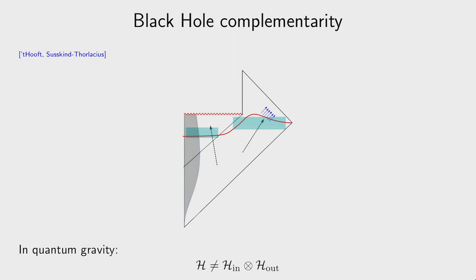It's not trivial to show that complementarity can be implemented consistently with quantum field theory. If you identify Hilbert spaces of regions far apart, operators in the interior won't commute with exterior operators, potentially enabling superluminal information transfer — a violation of locality at the level of effective field theory. We'll return to this during the last lecture.